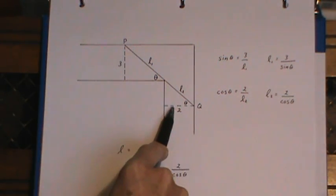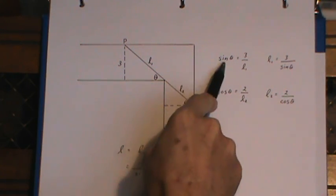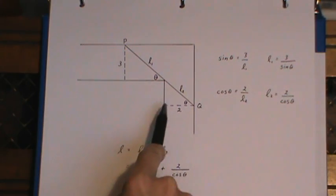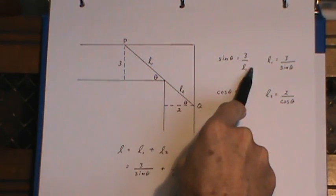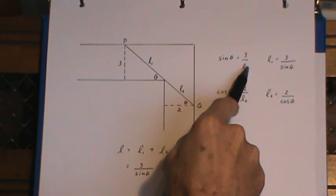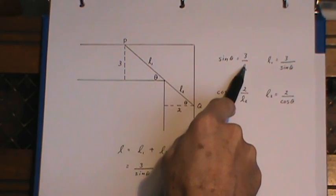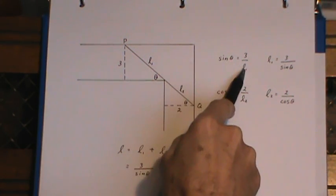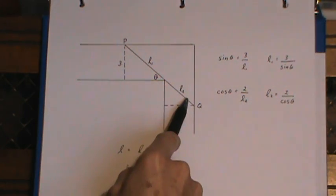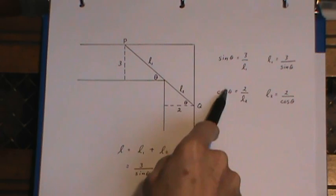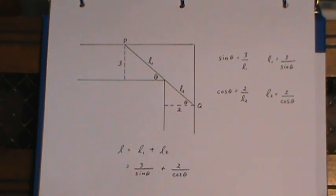The sine of theta, opposite over hypotenuse, I rearranged it. I call this a cross trade—what we're really doing is multiplying both sides by L1 and dividing both sides by sine theta, but you can just trade places with these two variables. And down here we've got the cosine of theta, adjacent over hypotenuse, same thing and did a trade as well.